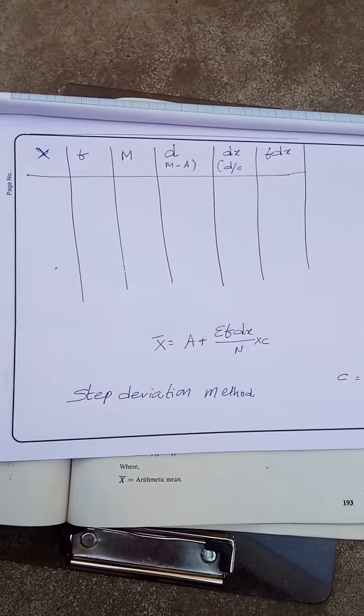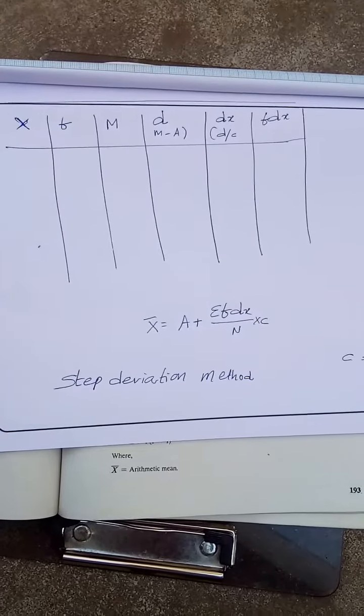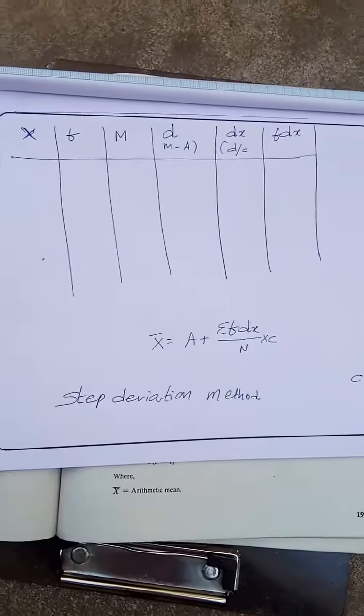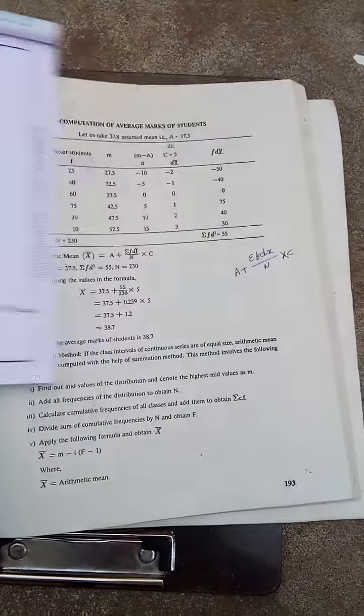x̄ = a + (Σfdx/n)×c. A table is required to do this. This is the table which you have to prepare: x, f, m, d (m-a), dx (d/c), fdx. Now, c means class interval.